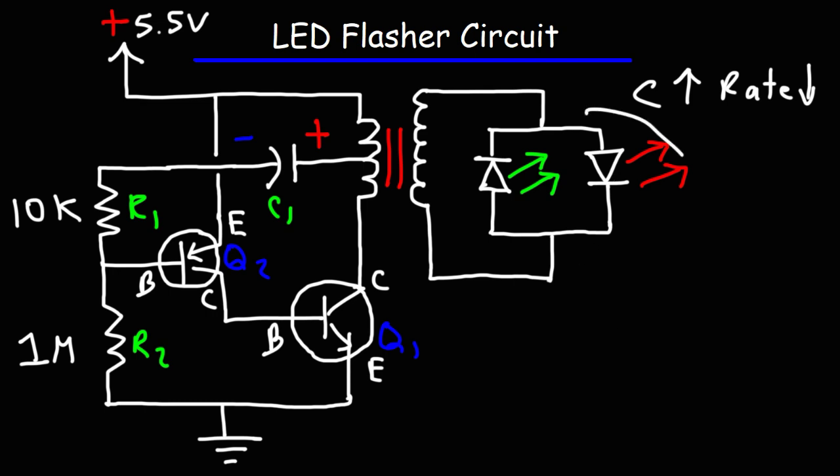So the current flows in this direction, the red LED is activated, and when it flows in this direction, the green LED is activated. So we have a DC input with an AC output because the current reverses direction. So we have an alternating current at the output, and that's what an oscillator circuit can do—it can convert a DC signal into an AC signal.